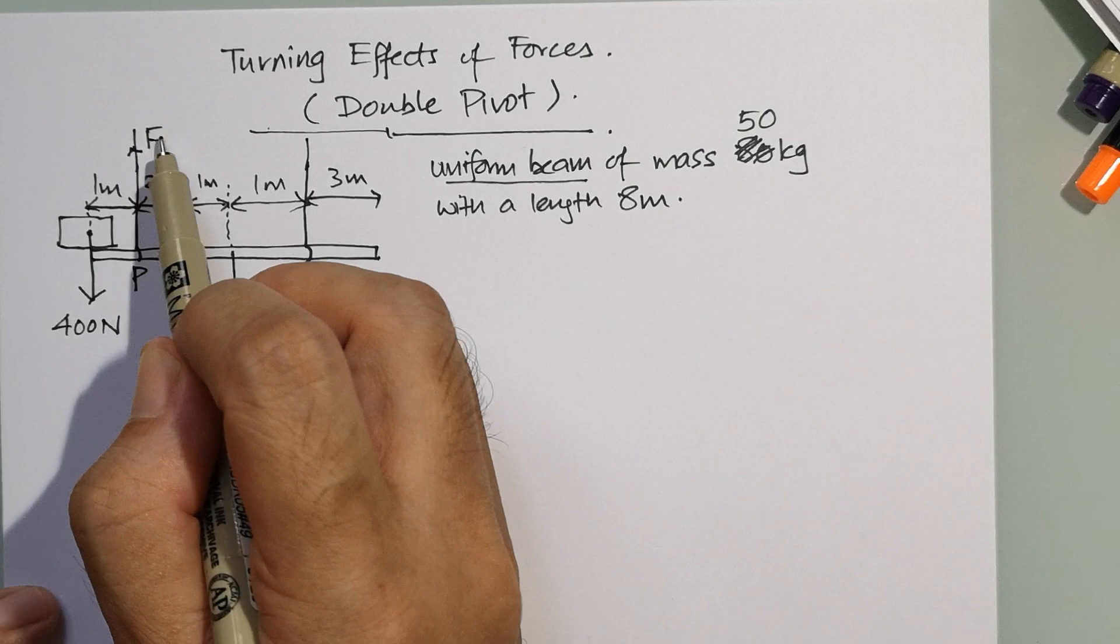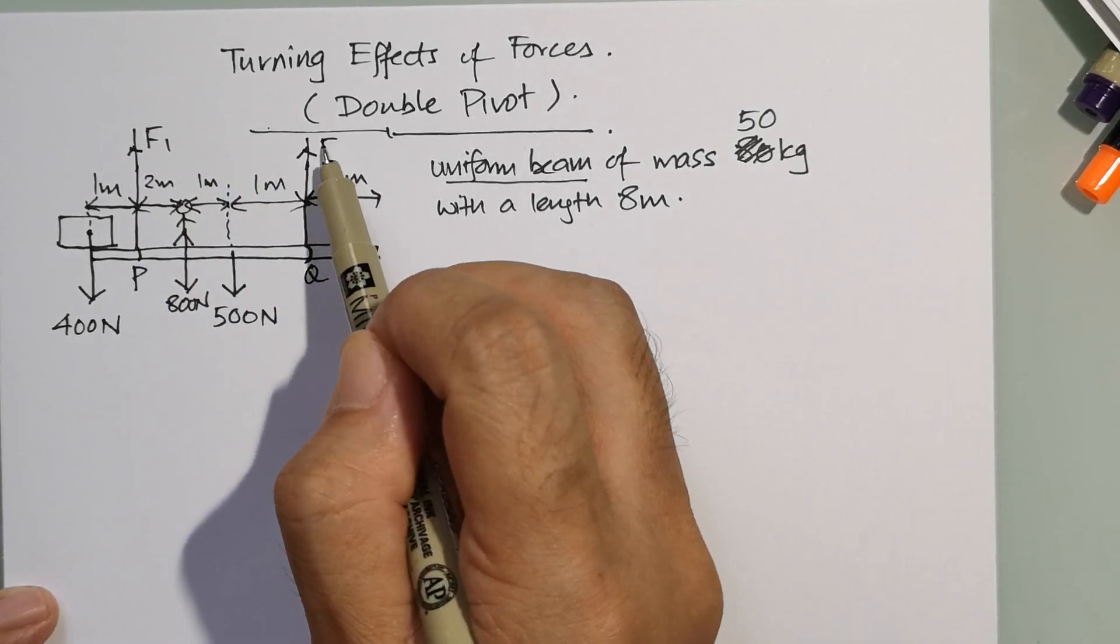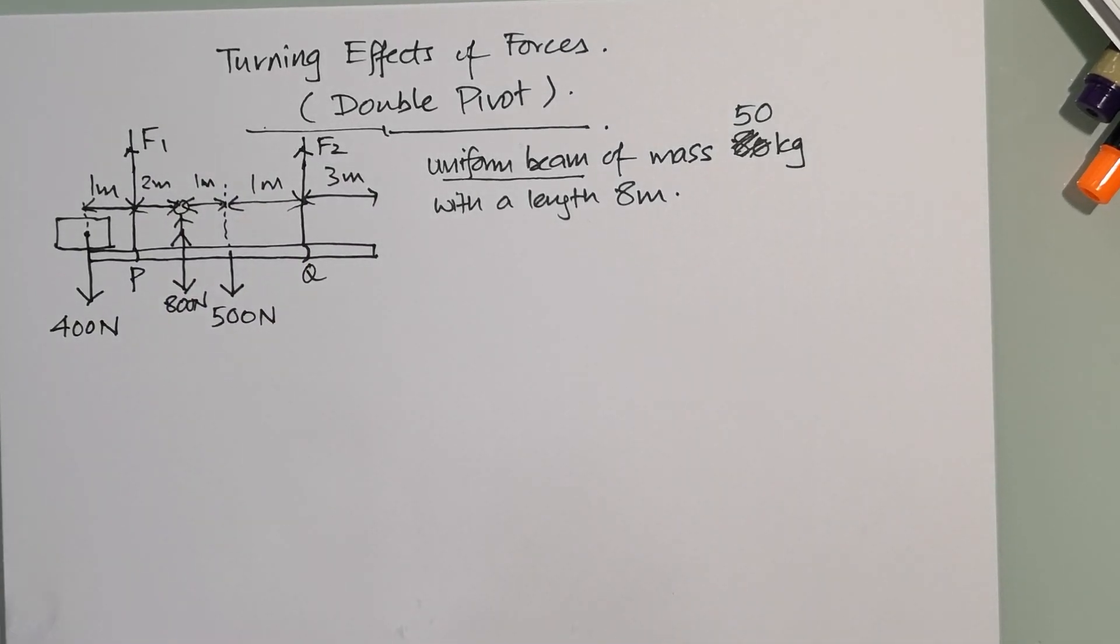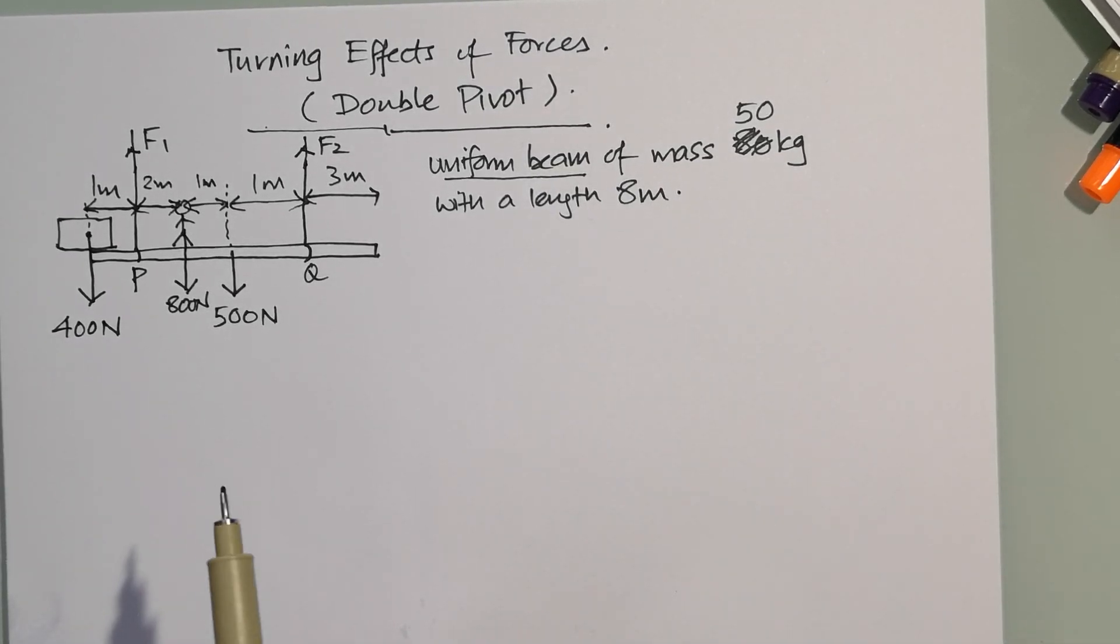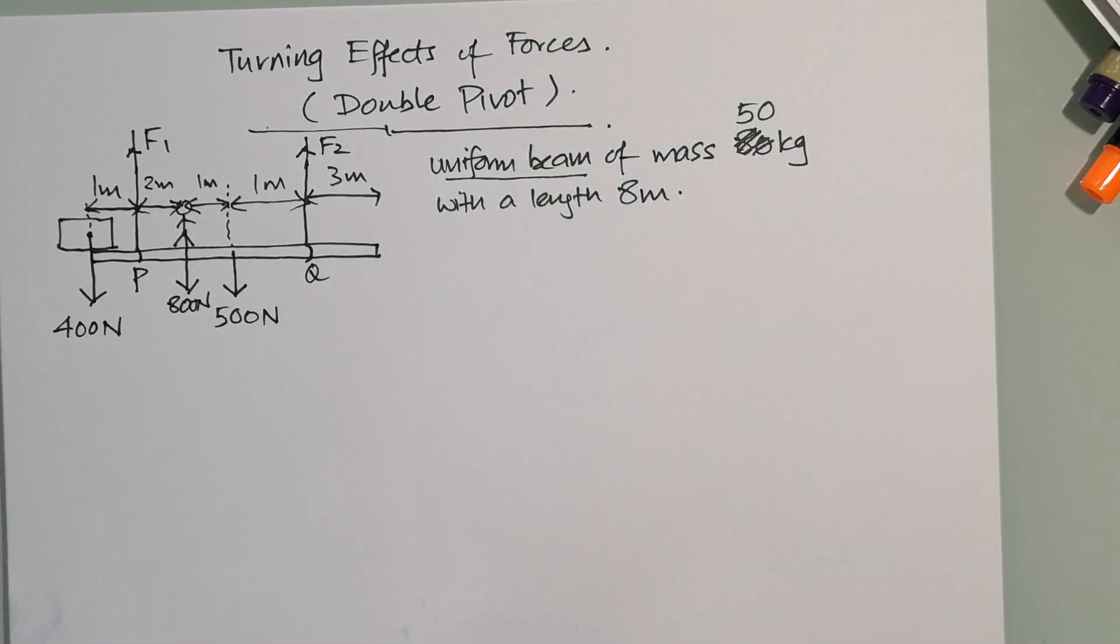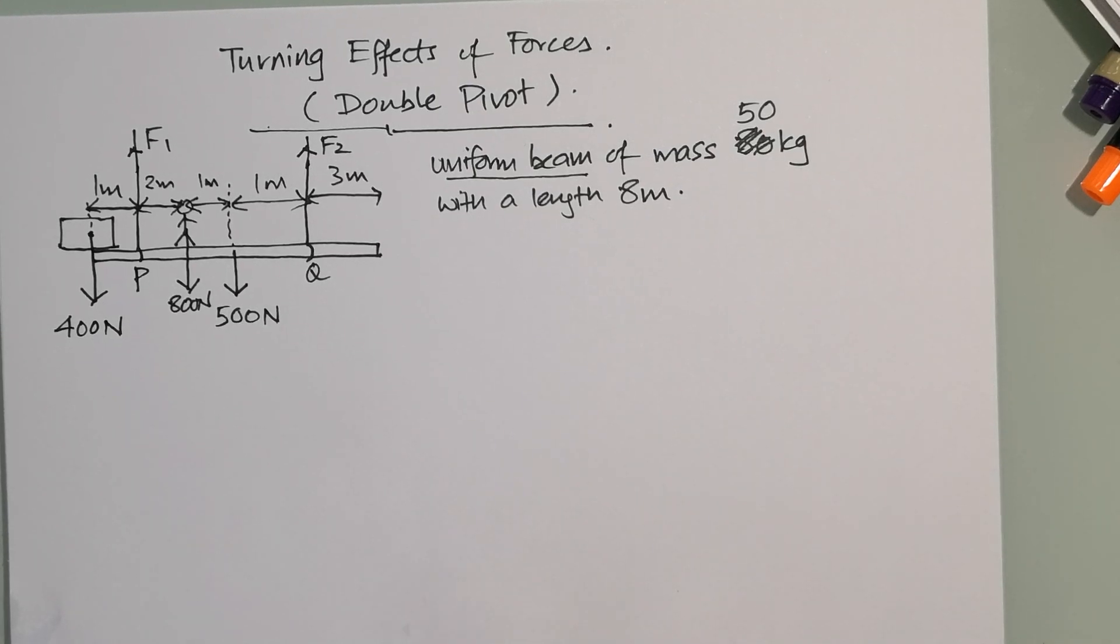This is F1 and this is F2. Why F1 and F2? Because with all the downward forces, these forces are actually pulling it up. So how do we solve questions that have a double pivot? How do you actually solve what is the tension or what is the force on both strings at point P and Q? To solve a double pivot you have to do a few things. First, step one: let's take P as the pivot.